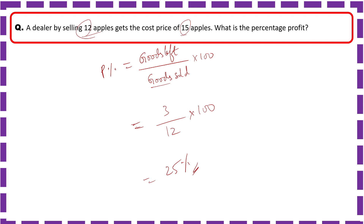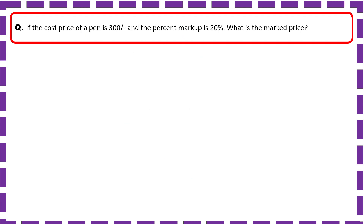If the cost price of a pen is ₹300 and the percent markup is 20%, what is the market price? Markup = 20% of cost price = 20% of 300 = ₹60. So market price = 300 + 60 = ₹360.